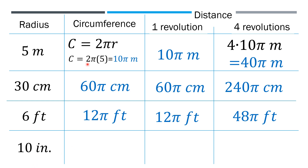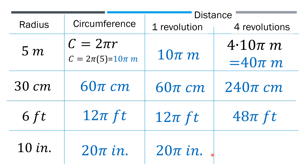For a radius of 10 inches, 2π times 10 gives us 20π inches, and that remains to be the distance after 1 revolution. And 20 times 4 represents 80π inches, which is the distance covered after 4 revolutions.